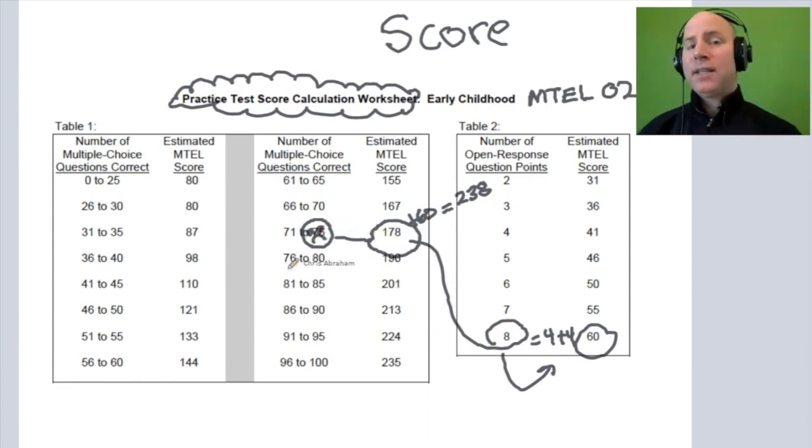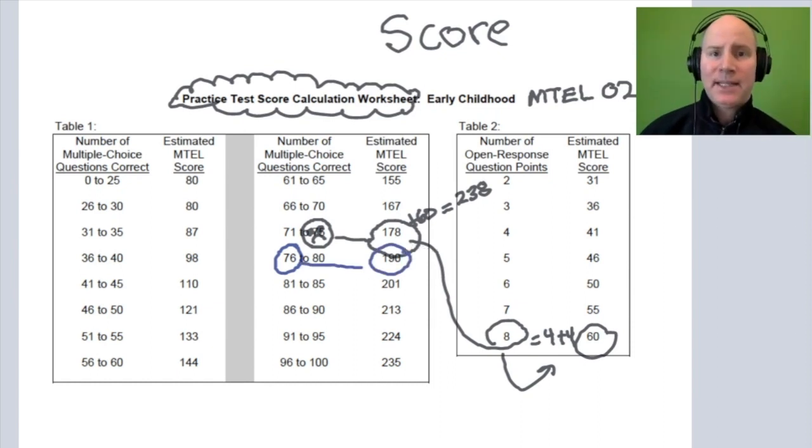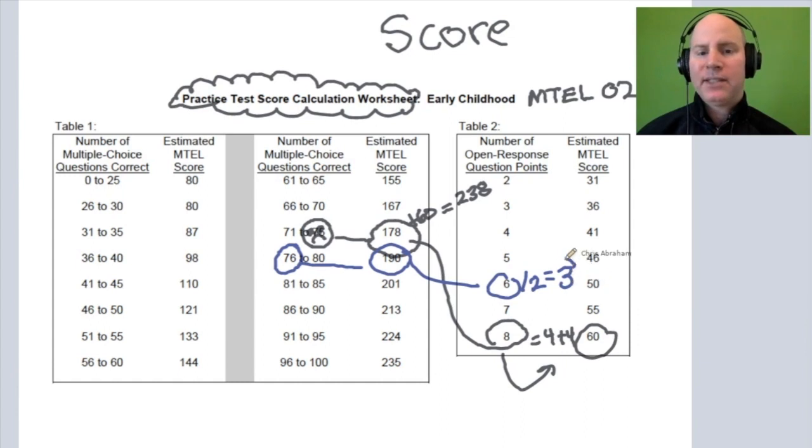Let's say you get 76 right, just one more question. Now you get 190 points on the multiple choice. And now you only need to get a six. A six means you've got two threes on the essays. So the two threes, they'll do the six divided by two. It means your average score in the essays is a three. If you get 76 right, one more question right on the multiple choice, and you get a three or four, you pass because 50 plus 190 is 240.